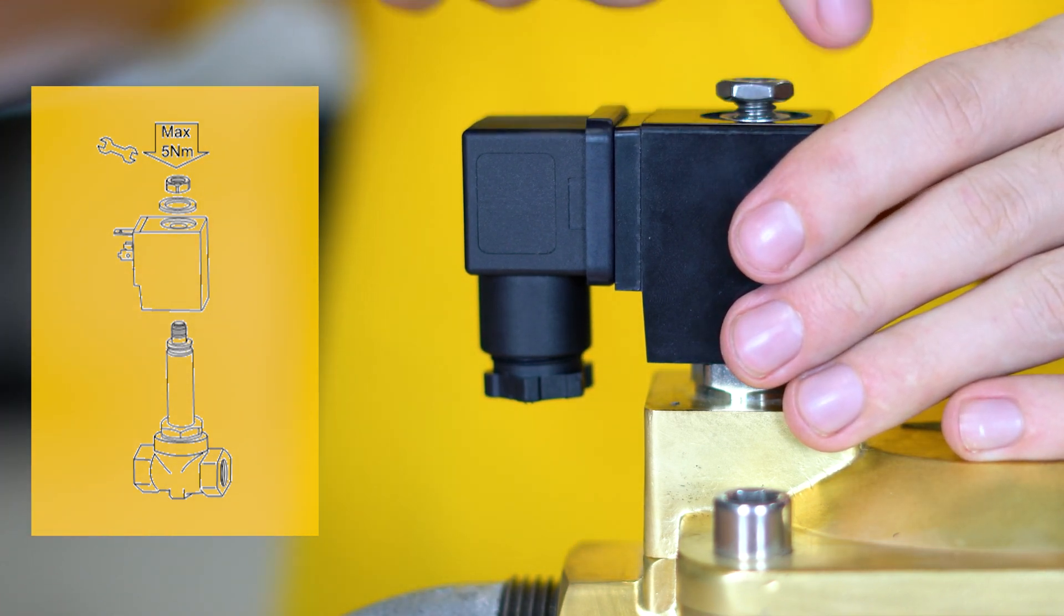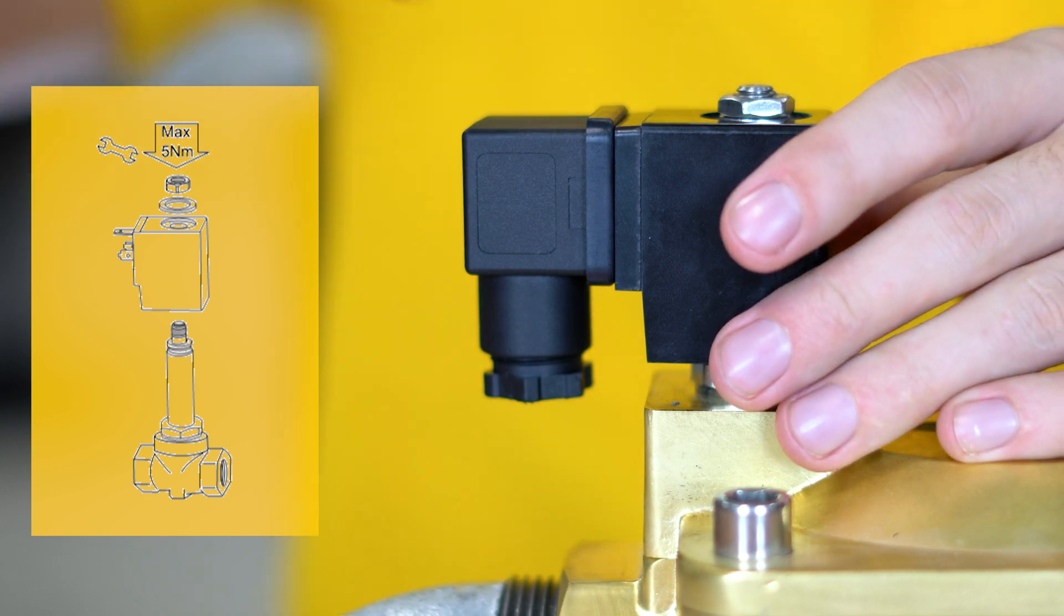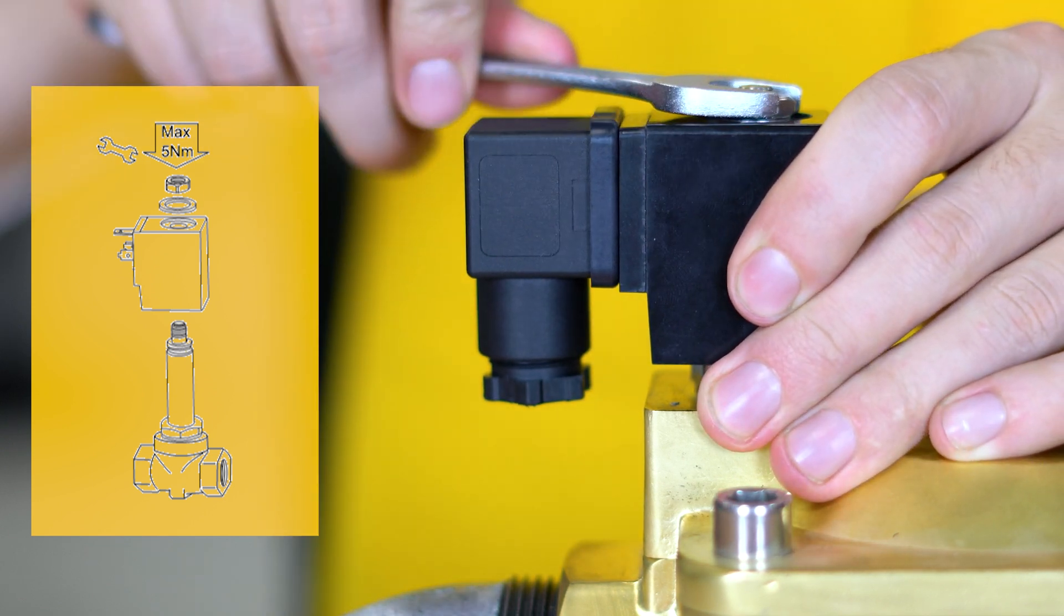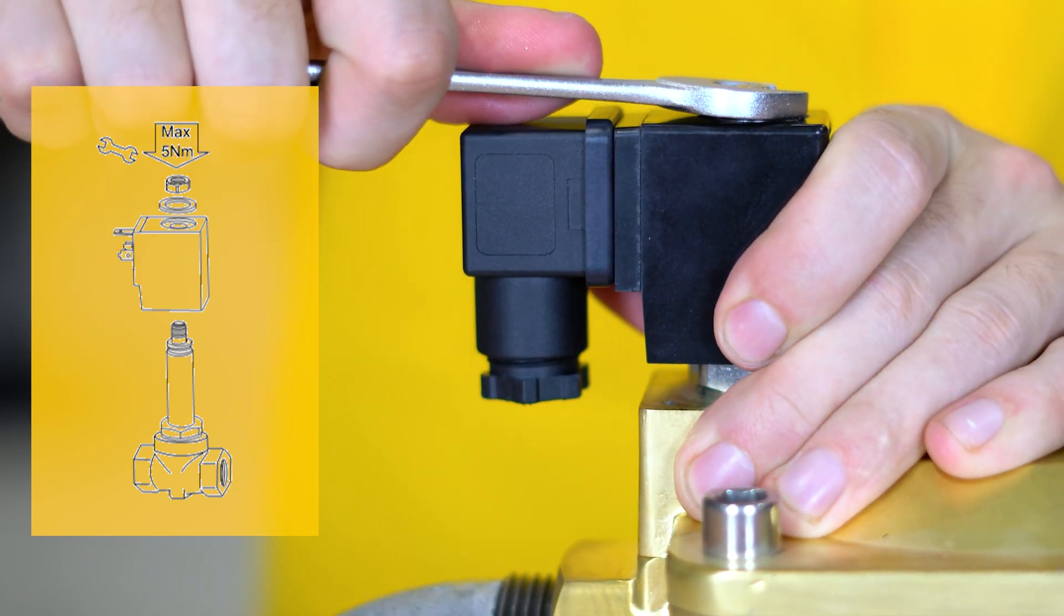If you tighten it too much, you may have damaged the valve. If the spool is too loose, you can cause vibrating noises. Tight is tight.